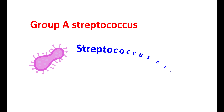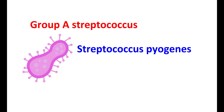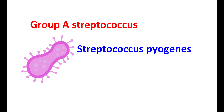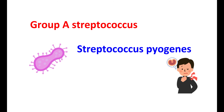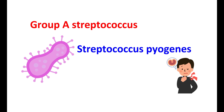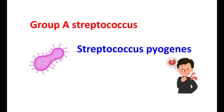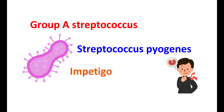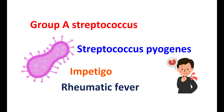Group A Streptococcus, also known as Streptococcus pyogenes, is the specific bacteria that produces a range of infections that may be mild to severe. In this context, it can produce strep throat, but it can also be associated with various other infections like impetigo, which produces skin infections. It can also produce serious conditions like rheumatic fever and toxic shock syndrome.